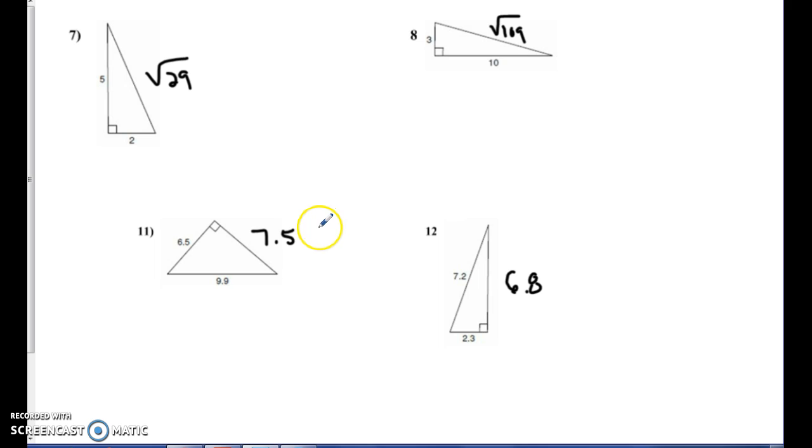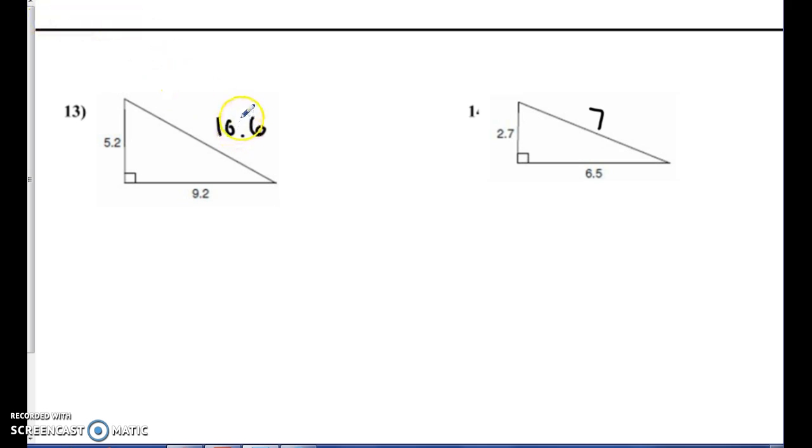Number 11, I got the decimal to be 7.5. Number 12, I got to be 6.8. Number 13, I got 10.6 to be the missing side. And number 14, I got that side measure to be 7.